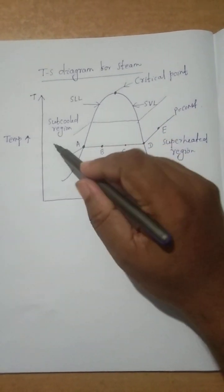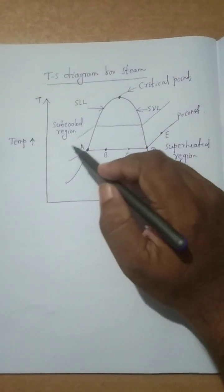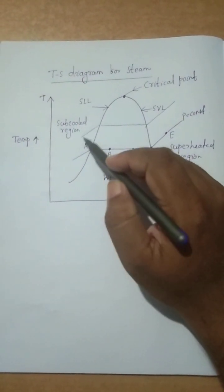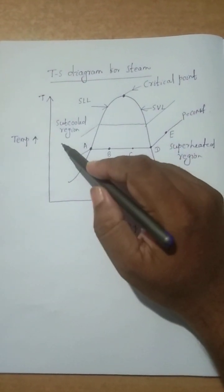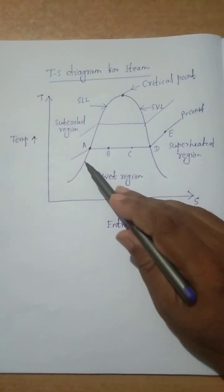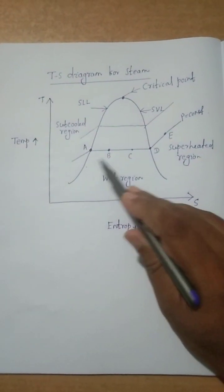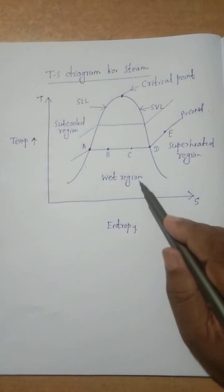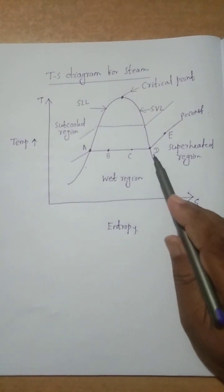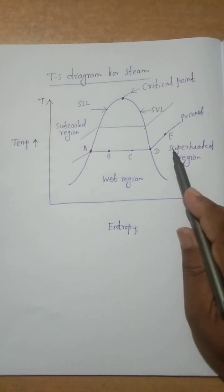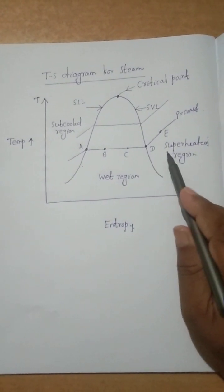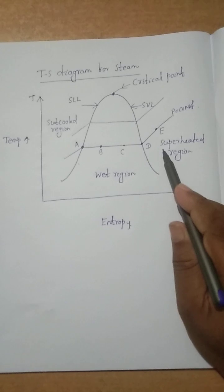The area to the left of the saturated liquid line is known as the sub-cooled region. The area between the saturated liquid line and saturated vapor line is known as the wet region. The area to the right of the saturated vapor line is known as the superheated region.